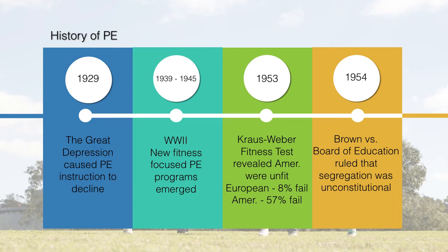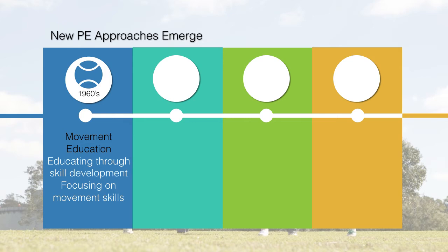Brown v. Board of Education was tremendously impactful for physical education. Although women had their own PE programs, they weren't expected to perform the same things as men. Brown v. Board of Education ruled that segregation was unconstitutional, since minorities could not participate in regular physical activity due to segregation. Once that ruling came, integration affected physical education as well. Not only did more women participate, but all minorities did too — a huge improvement in education overall, including physical education.